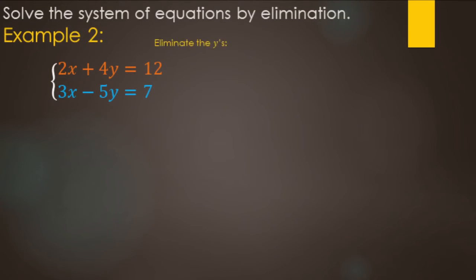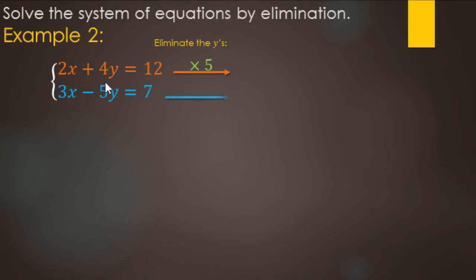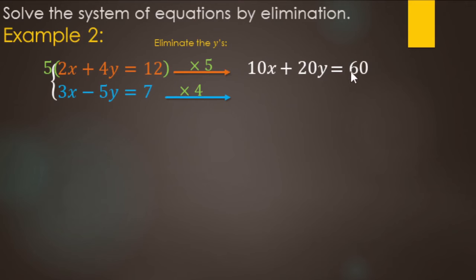Solving by elimination again. If we added straight down on this system, no variables would be eliminated. Let's look at eliminating the y's — we want to make them positive 20 and negative 20. Multiply the top equation by 5 and the bottom by 4: 5 times 2x makes 10x, 4y times 5 makes positive 20y, and 12 times 5 makes 60. For the bottom: 4 times 3x makes 12x, negative 5y times 4 makes negative 20y, and 7 times 4 makes 28.